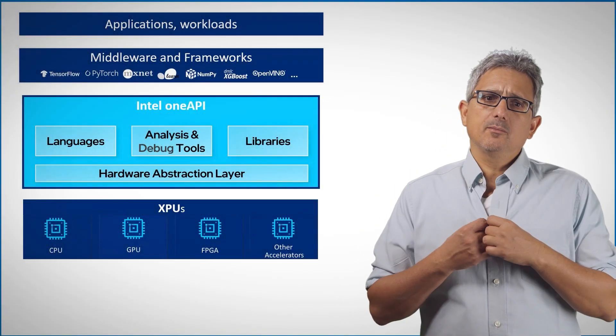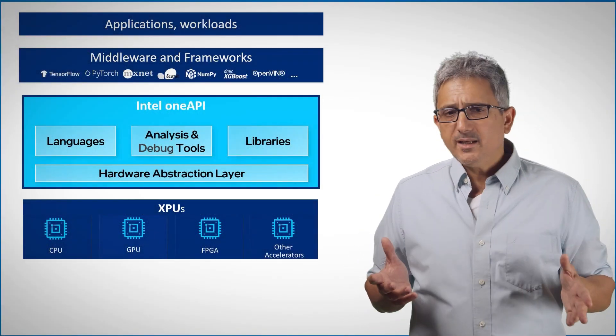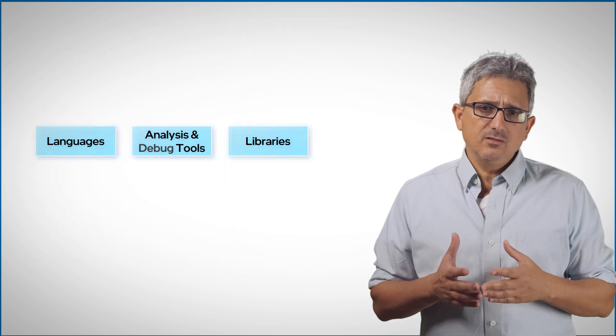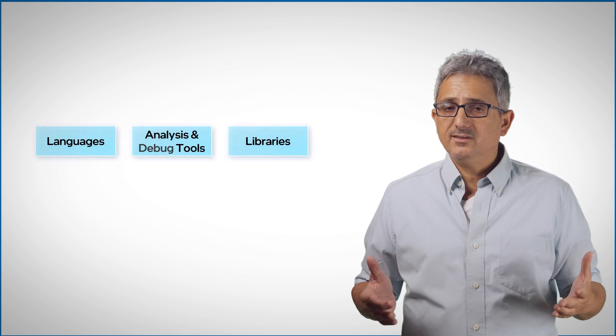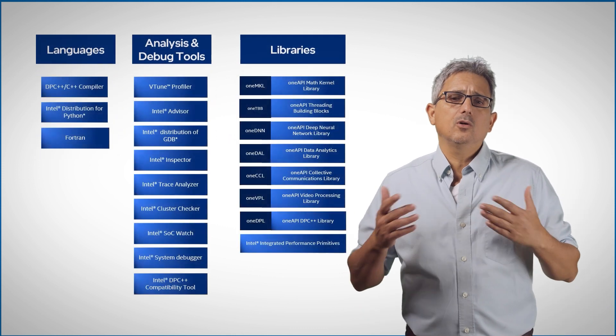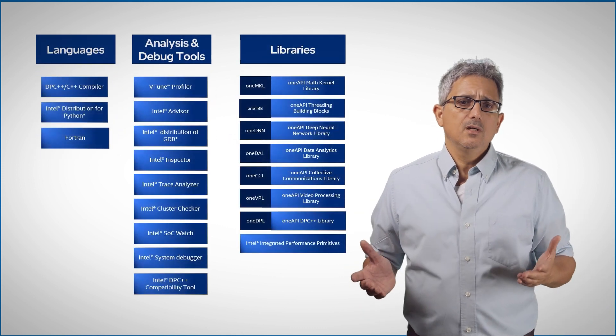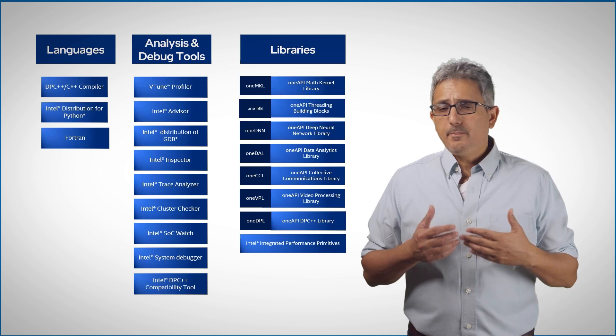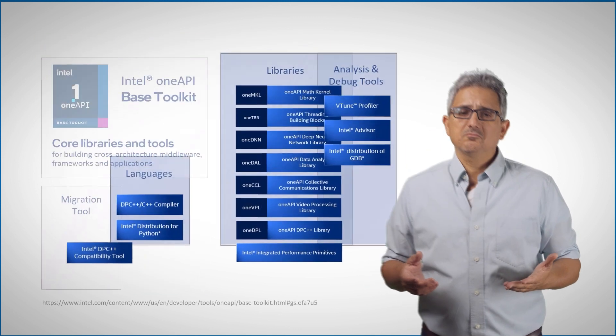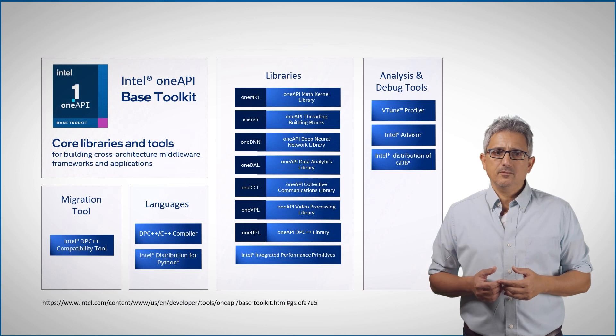In previous videos we've talked about the OneAPI components. We mentioned the multi-device, multi-vendor open spec libraries that can now work not only on CPU but on multiple devices and vendors, and are packed into toolkits — the base toolkit, for example. That includes, among other things, the OneAPI Data Parallel C++ library, what we call OneDPL.